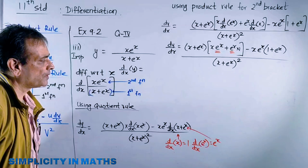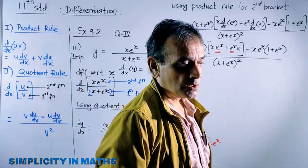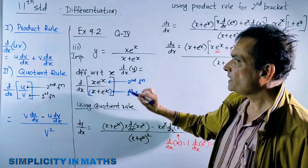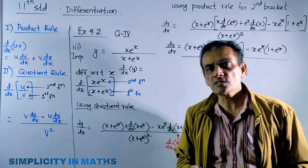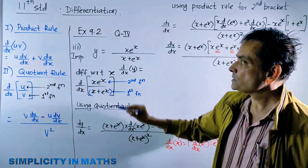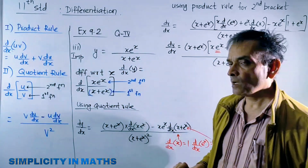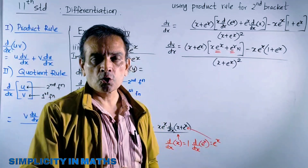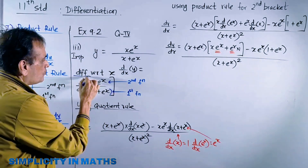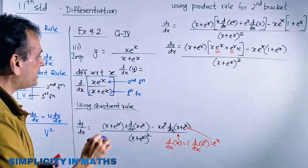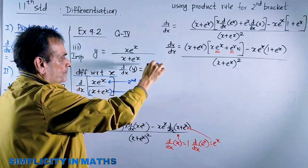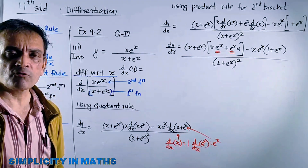This sum was asked in one JEE exam, where there were four options. Let us see what answer we get. The question is: differentiate with respect to x. Differentiate with respect to x means find the derivative with respect to x of the given function. The given function is y equals all of this. First thing: to take derivative means d/dx on both sides. d/dx means finding the derivative - differentiate with respect to x.